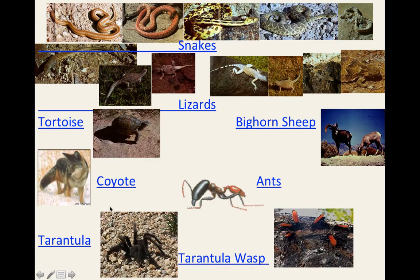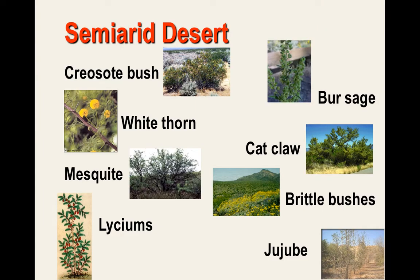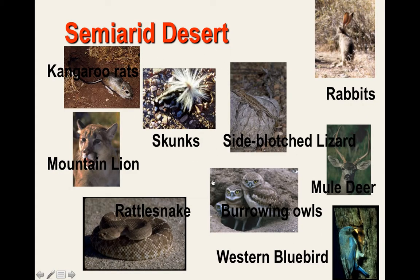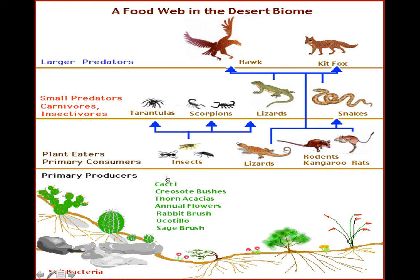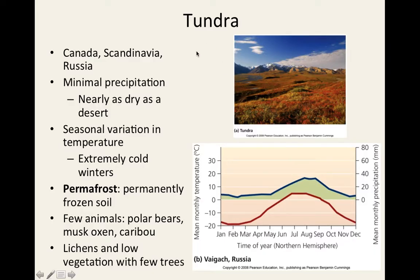Desert animals thrive on very little vegetation or nutrients in the soil. The semi-arid desert has more brush and grass, with animals that burrow into the ground and feed off available vegetation. The desert food web features succulents — plants that absorb whatever moisture exists in the soil — at the base, working up through the various consumer levels.